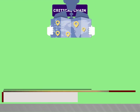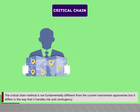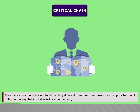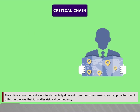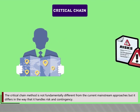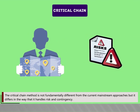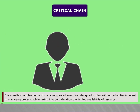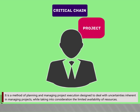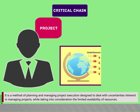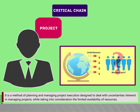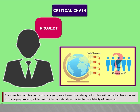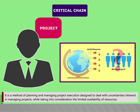The Critical Chain method is not fundamentally different from the current mainstream approaches, but it differs in the way that it handles risk and contingency. It is a method of planning and managing project execution designed to deal with uncertainties inherent in managing projects while taking into consideration the limited availability of resources.